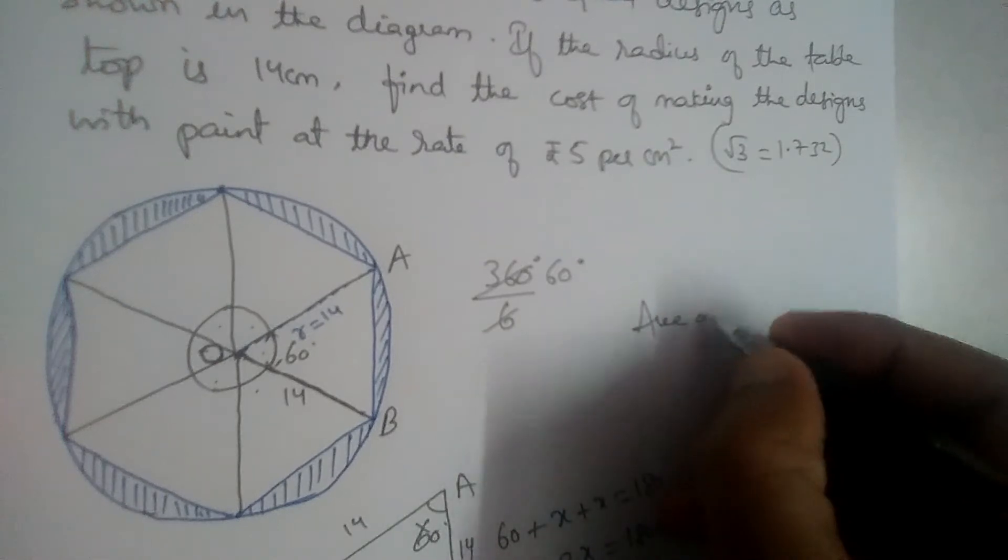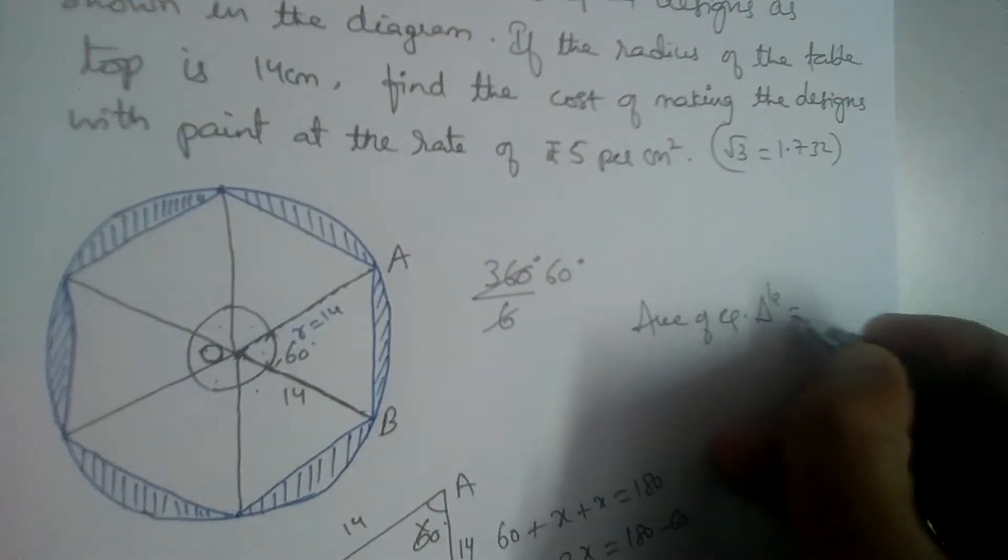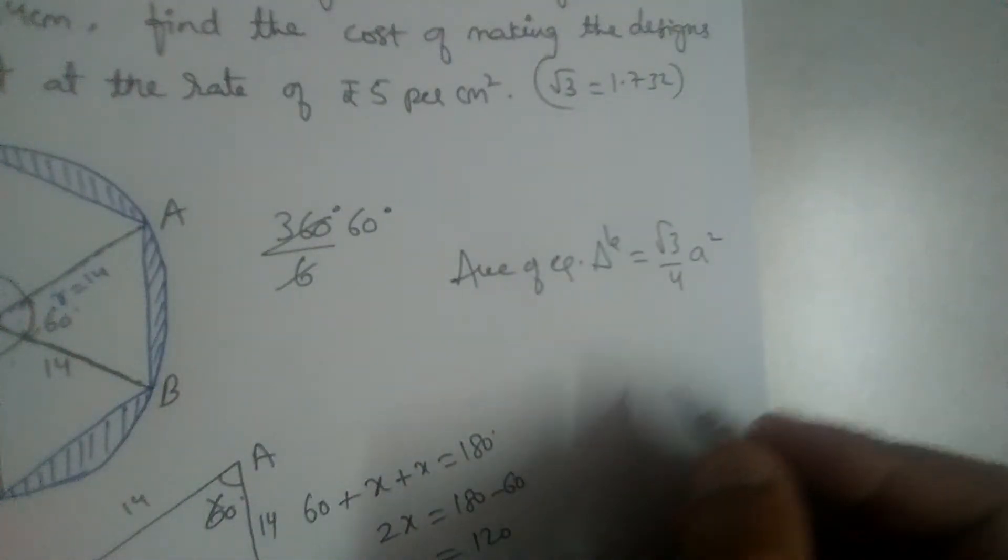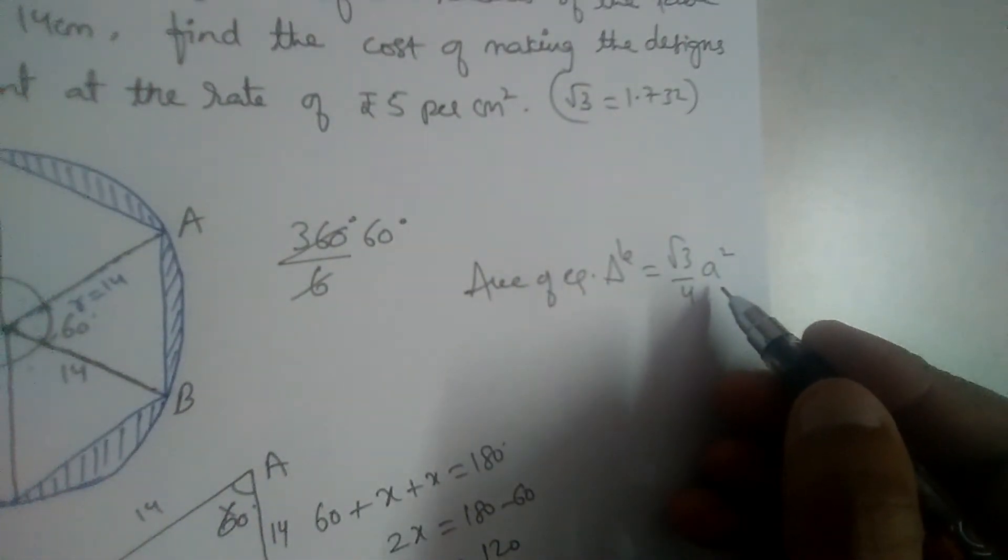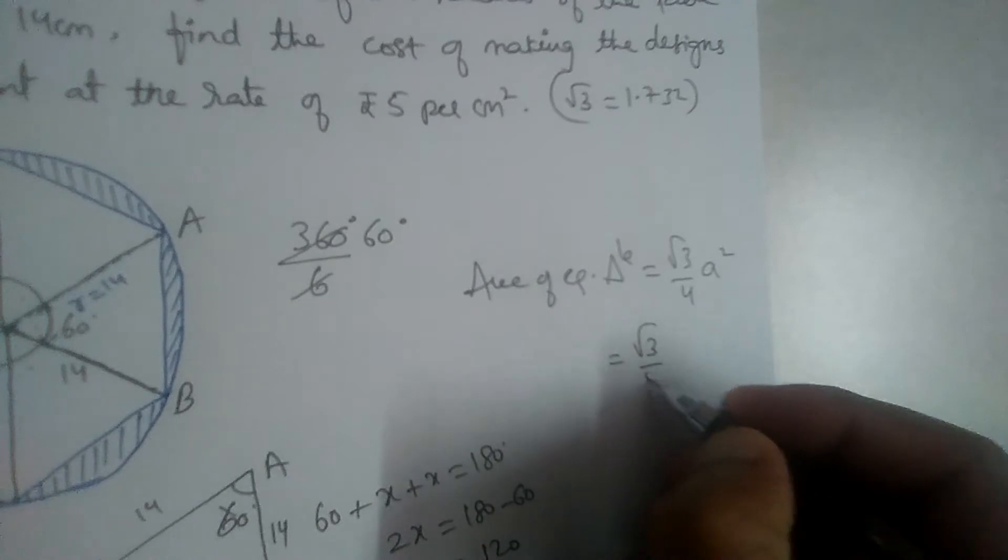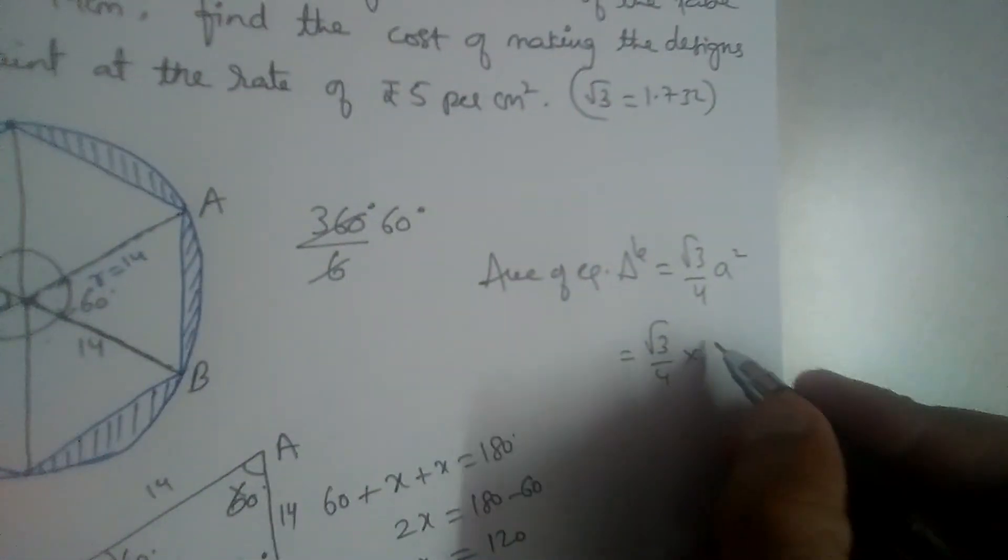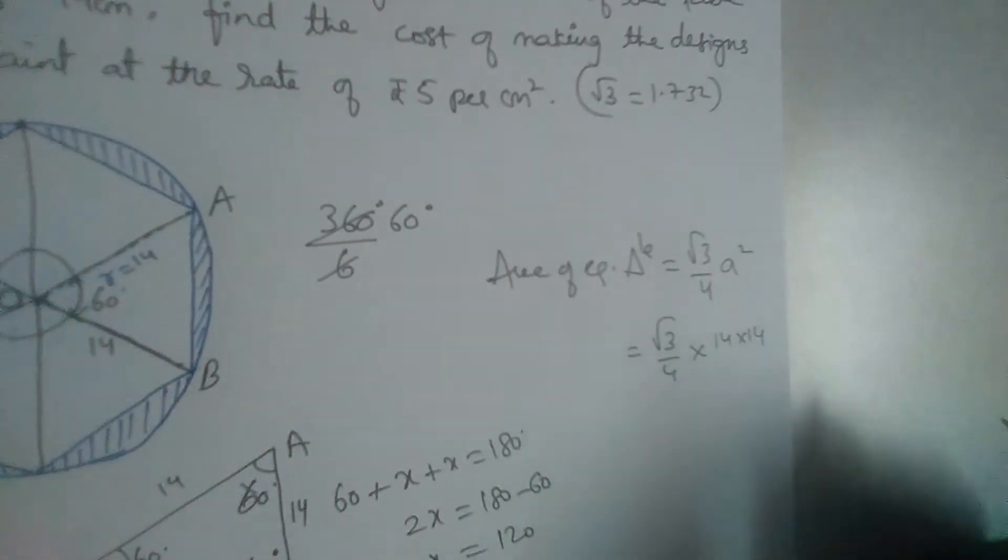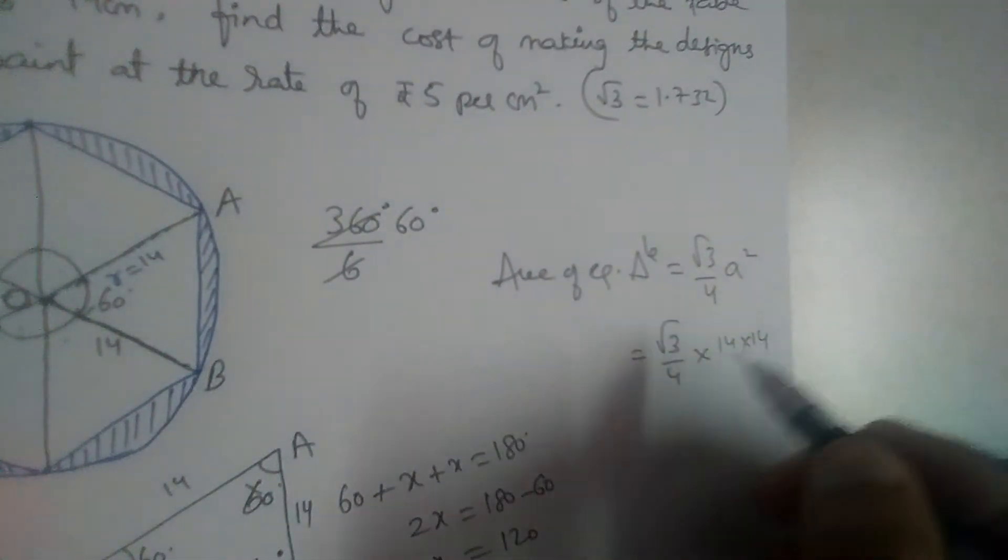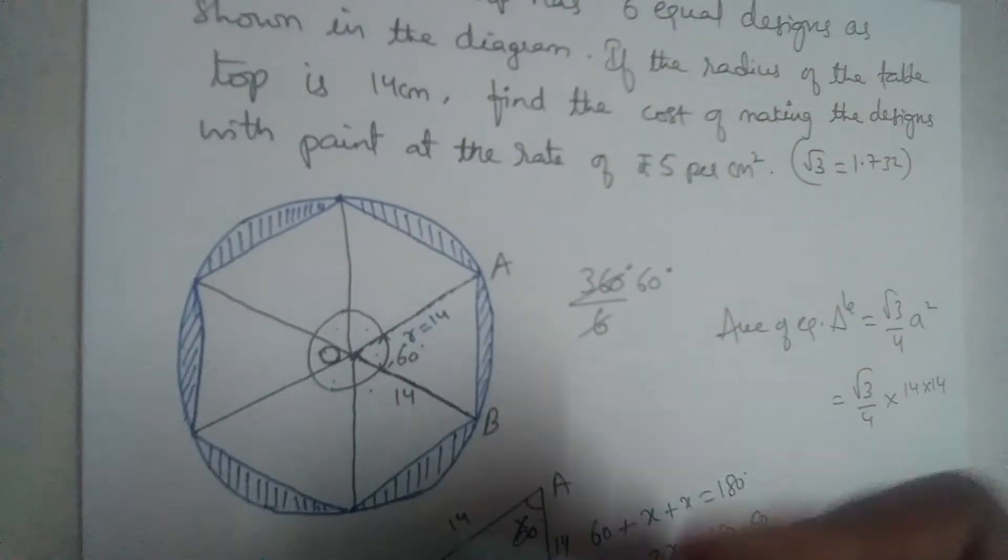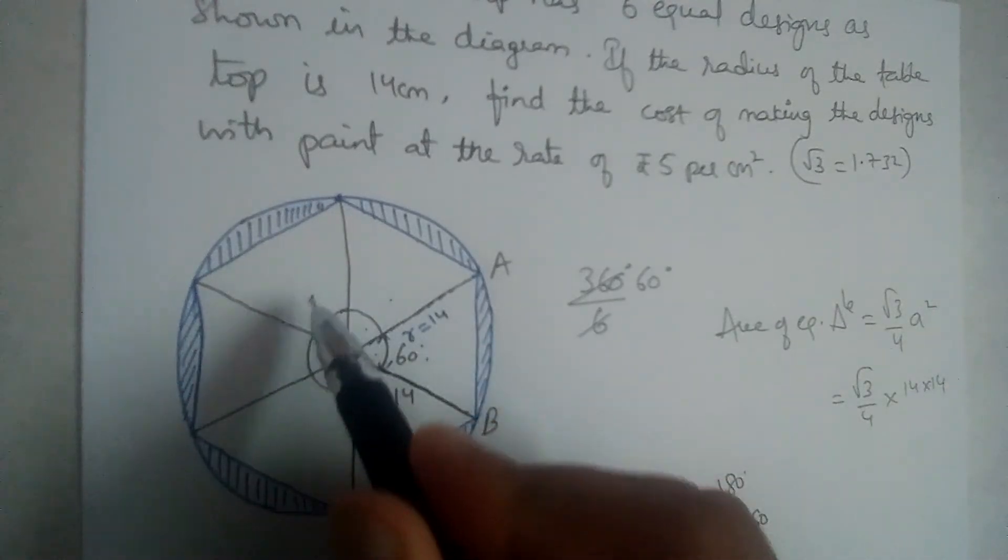What is the area of equilateral triangle? Area of equilateral triangle is root 3 by 4 times a square, where a is the side. Now, root 3 by 4. What is the side here? 14. So it is 14 into 14.